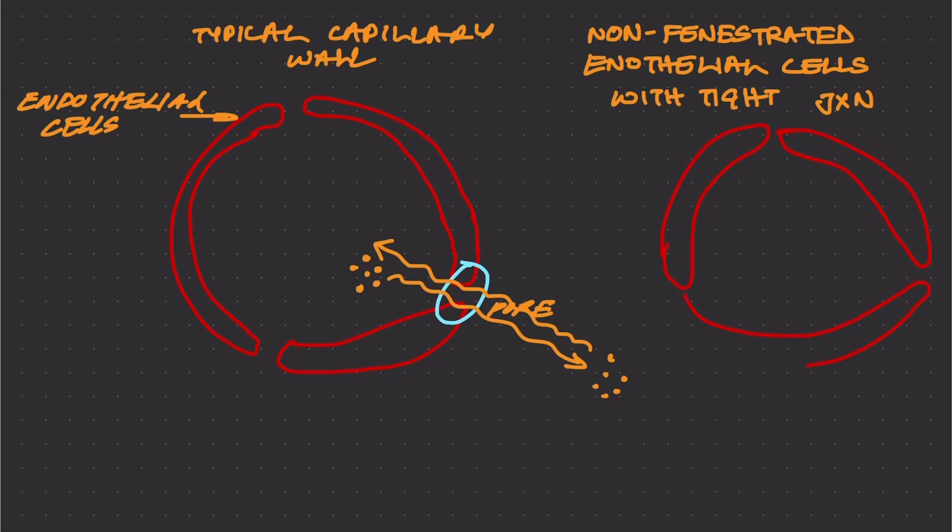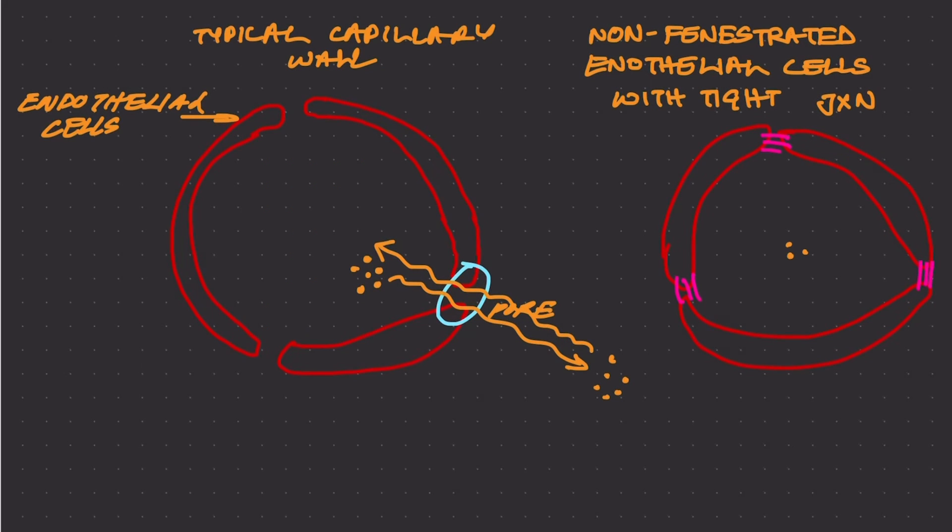Now let's look at the capillary wall of a blood vessel inside the subarachnoid space. These would be the endothelial cells that make up the blood vessel, and these are not fenestrated with tight junctions. So the pores that were here on the left are not available in this blood vessel.